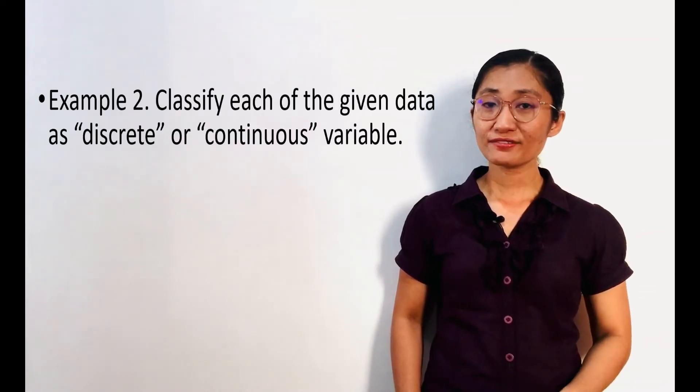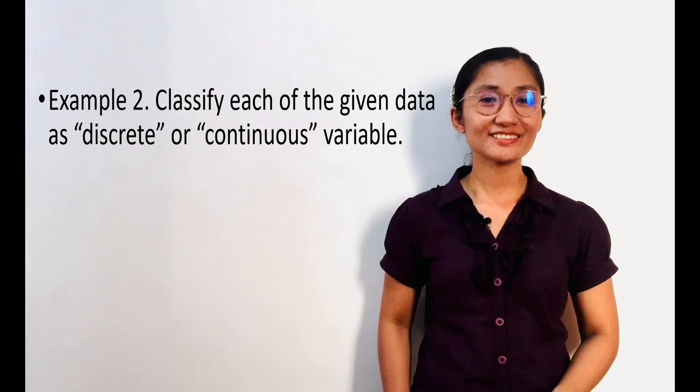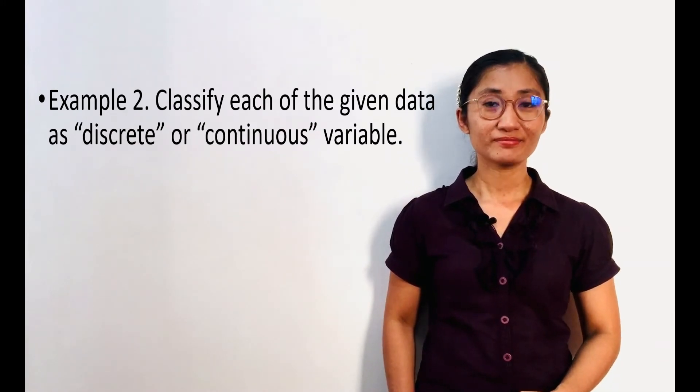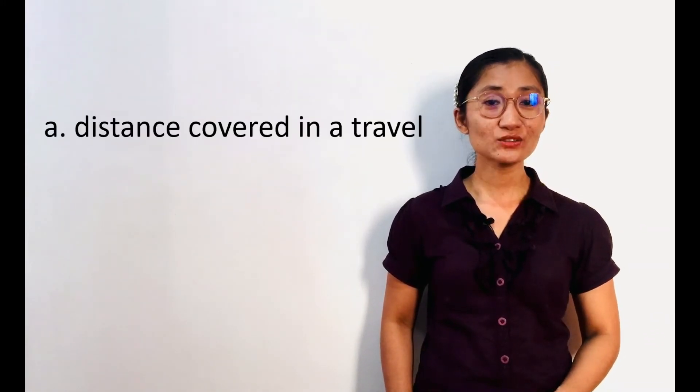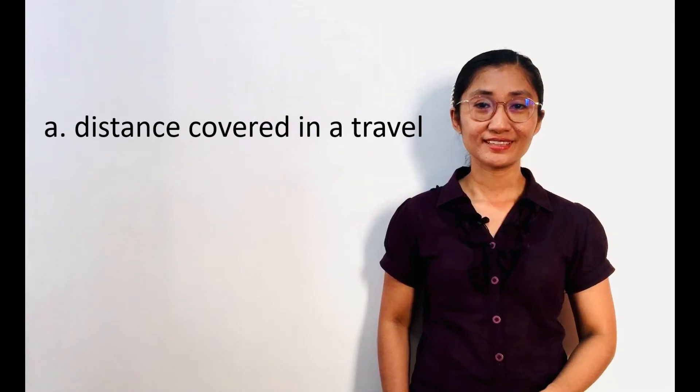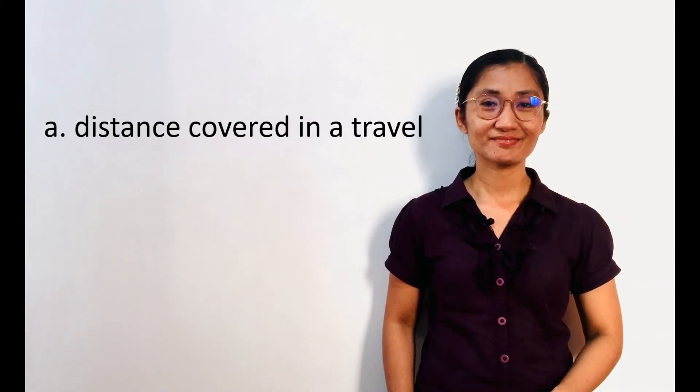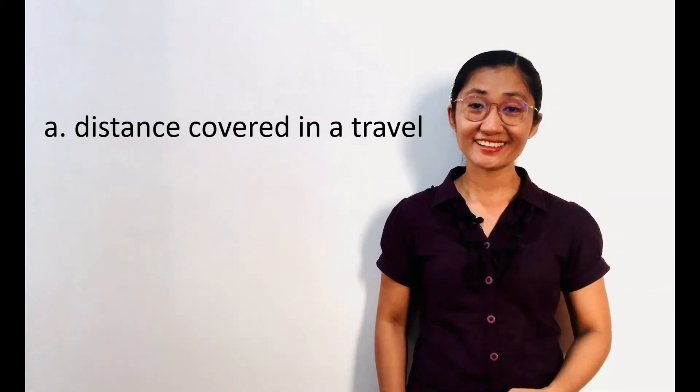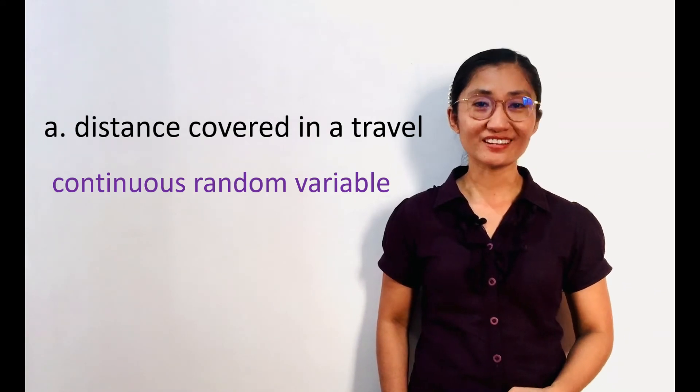Example 2. Classify each of the given data as discrete or continuous variable. First, distance covered in a travel. Is it discrete or continuous? The answer is, it is a continuous random variable.